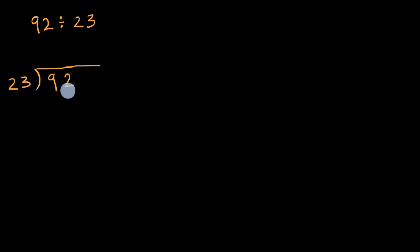23 is roughly 20, 92 is roughly 90. So 20 times four would be 80. That seems pretty close. 20 times five would be 100, so that goes over 90. So I'm going to try four here. Let's see if that works out.